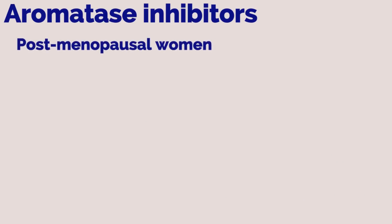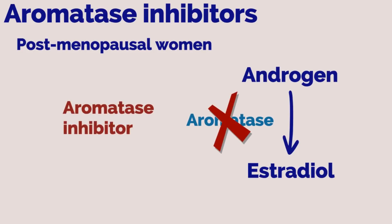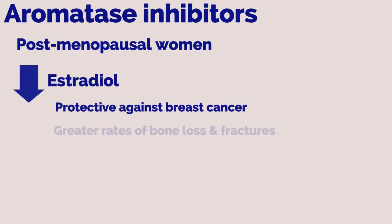Aromatase inhibitors are typically used in postmenopausal women. In postmenopausal women, most of the circulating estrogen is from peripheral conversion of androgen to estradiol by the enzyme aromatase. Aromatase inhibitors reduce circulating estradiol in postmenopausal women, which is protective against breast cancer, but associated with greater rates of bone loss and fractures.